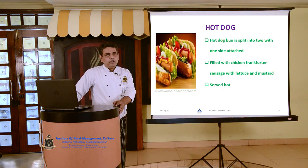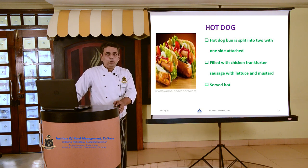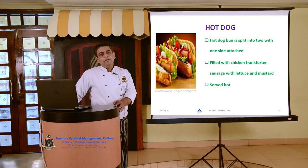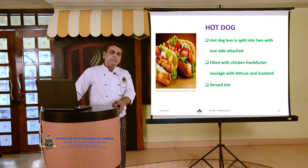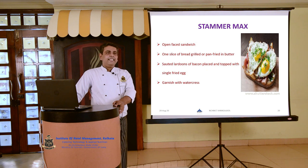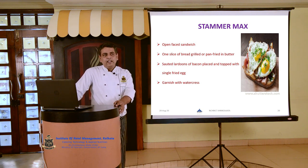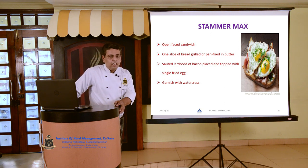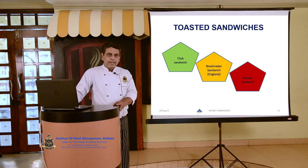The next is hot dog sandwich, also very popular and a very convenient sandwich for rush hour. The hot dog bun is split into two with one side attached so that the filling does not fall easily. It is filled with varieties of chicken sausages — specifically frankfurter sausages — with lettuce and mustard, and served hot. Next is the Smørrebrød sandwich, a kind of open sandwich. One slice of bread is grilled or pan-fried with butter, with sautéed lardons of bacon placed on top with a single fried egg and garnished with watercress or fresh herbs. In the hot sandwich category, under toasted sandwiches, we have club sandwich, bookmaker sandwich, and Denver sandwich.